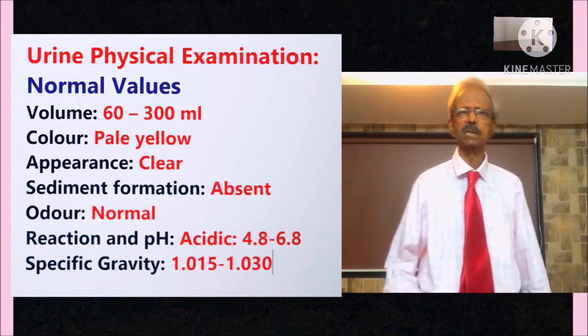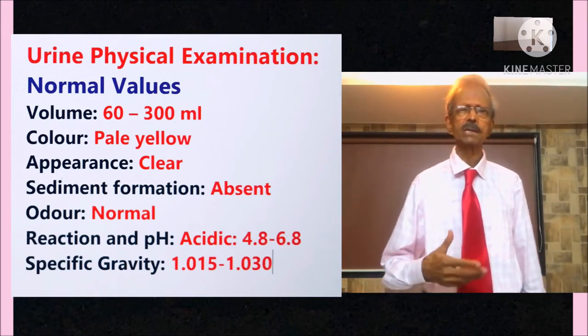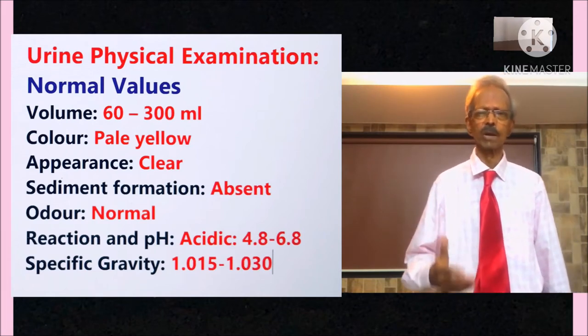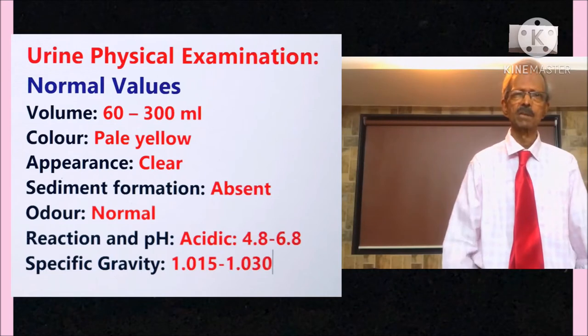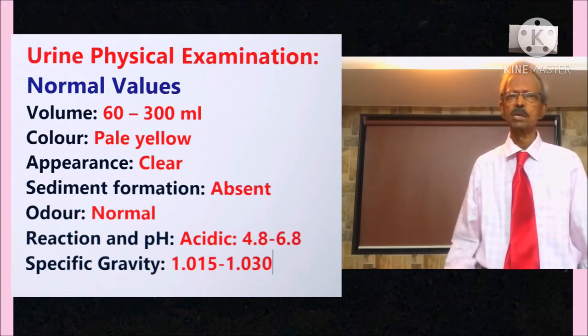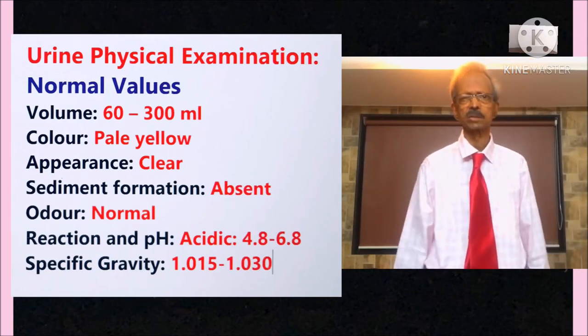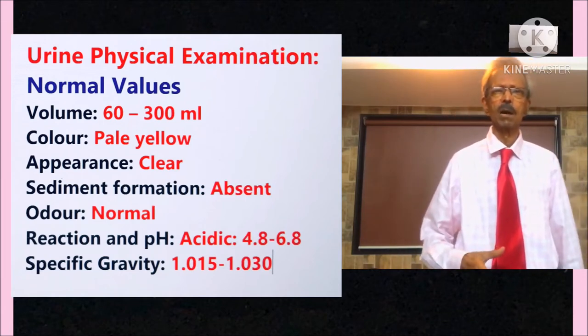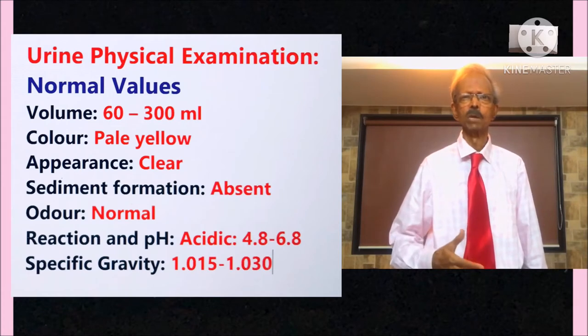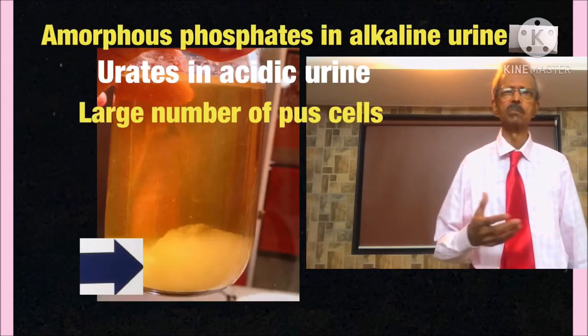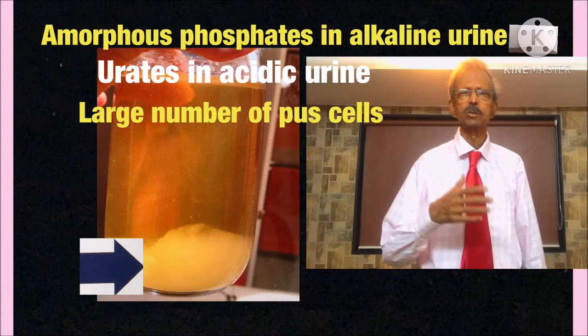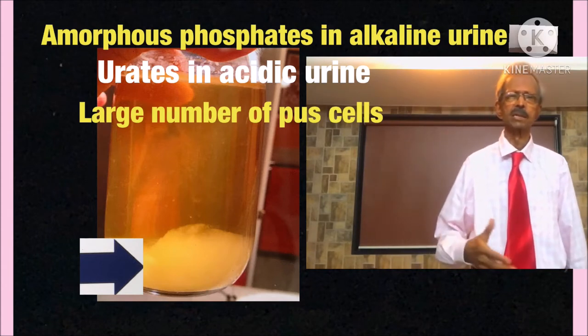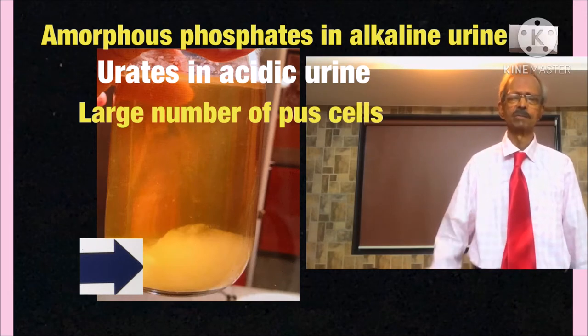Then about odor. Odor of urine usually is normal but it changes, it becomes fruity if ketone bodies are present in urine due to uncontrolled diabetes mellitus. And foul smell is observed because of urinary tract infection. Then regarding sediment. Presence of sediment indicates presence of amorphous phosphates and also due to blood cells and urinary tract cells in urine.